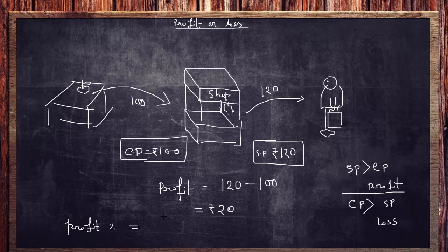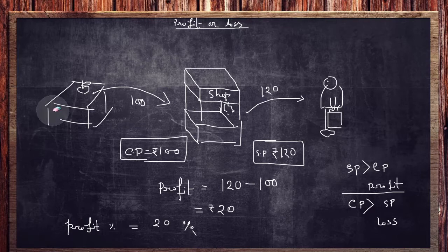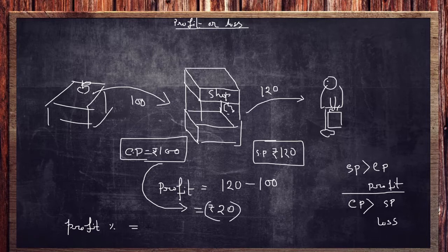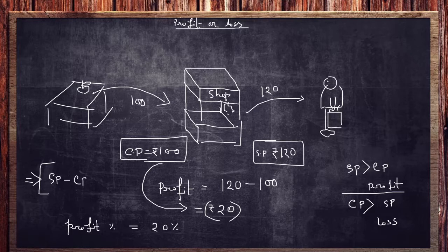Percentage means whatever counts per 100 rupees. Since profit or loss percentage is always based on the cost price, and the cost price is 100 rupees, you gained 20 rupees on 100 rupees — so that is 20 percent profit. The master formula for profit is: SP minus CP equals profit. Please note that down, it will help you throughout.